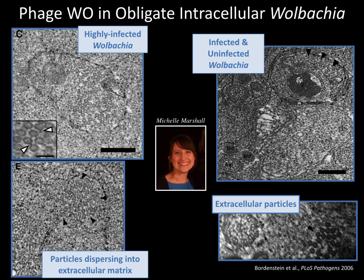Once the phages exit the Wolbachia cell — we were looking in testes — we tend to see those phage particles of similar size traveling around the testes tissue matrix. This is a packet of similarly-sized particles that we think are the bacteriophage now moving around the eukaryotic environment. The phages get out, they're now in the eukaryotic environment, and in theory they are looking for other Wolbachia cells to infect. They've also got to evade the eukaryotic immune response as these phage particles traverse that eukaryotic tissue.